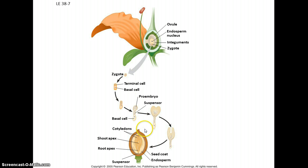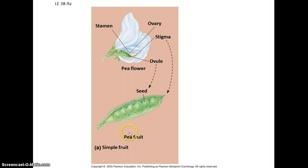Here's the development of the embryo — the diploid embryo developed from the zygote, surrounded by the endosperm. You've got the seed coat, and together this all becomes the seed. The ovary will develop into the fruit, which will then contain one or more seeds, like this peapod here.